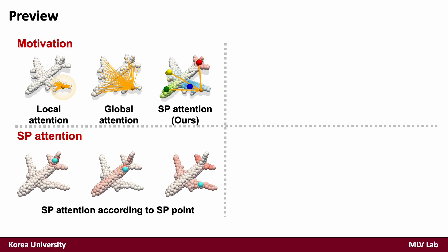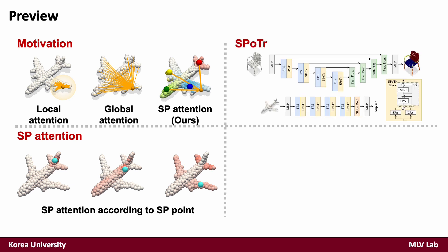SP attention performs global attention by computing attention weights with only a small set of self-positioning points. With SP attention, we propose SPFormer, which captures both local and global shape contexts by combining local point attention and self-positioning point-based attention.